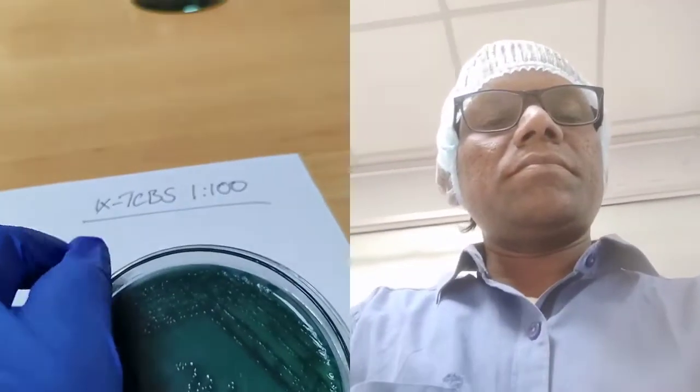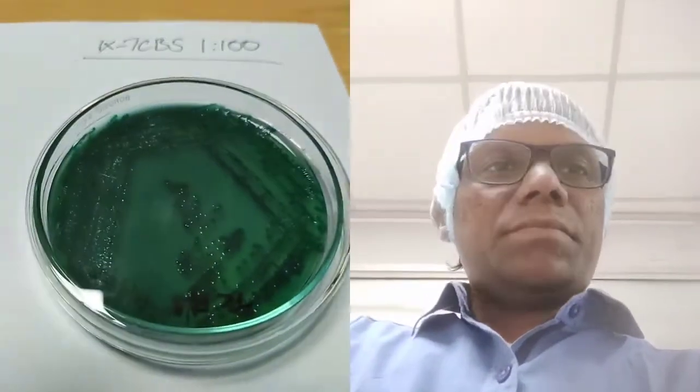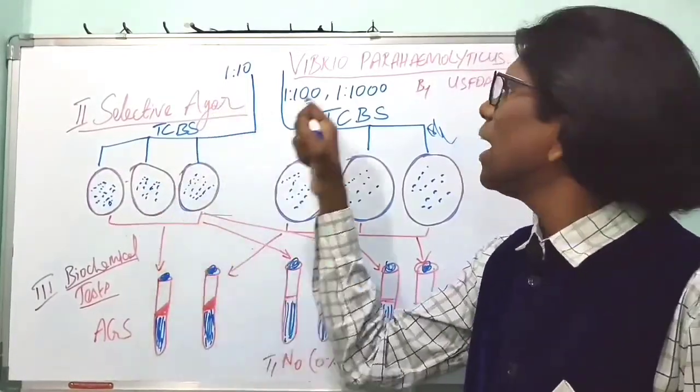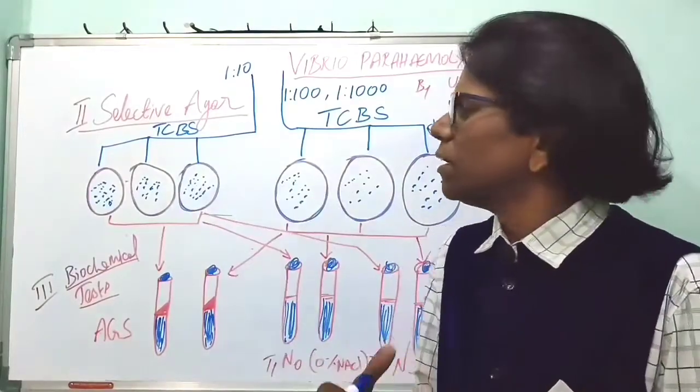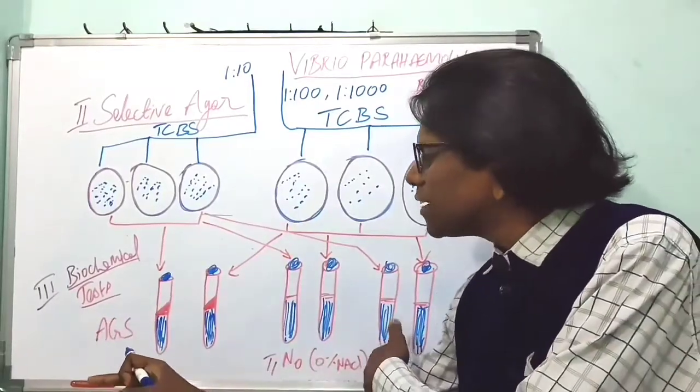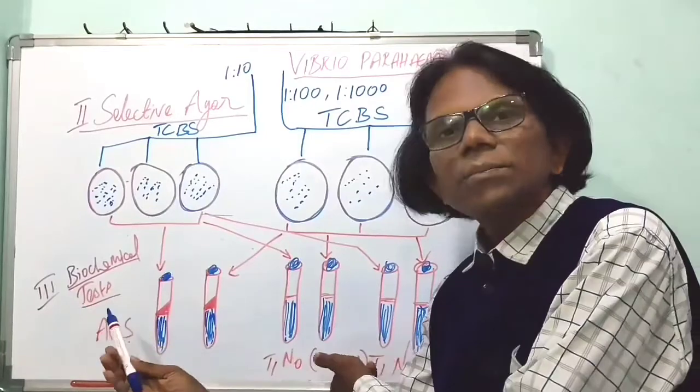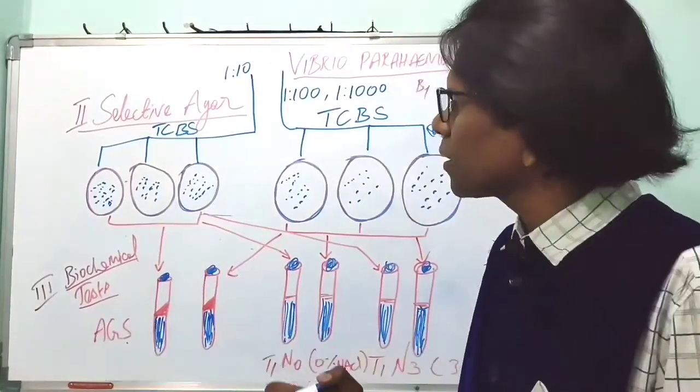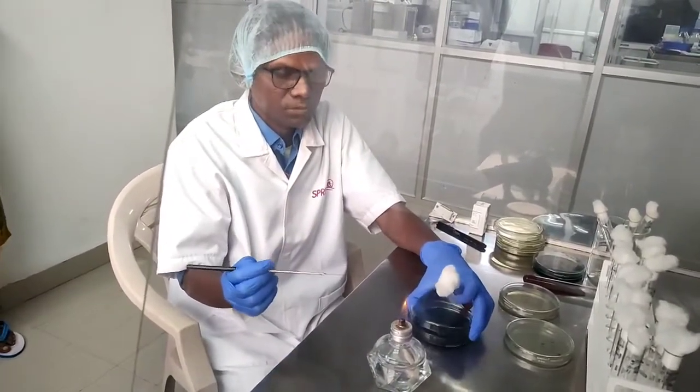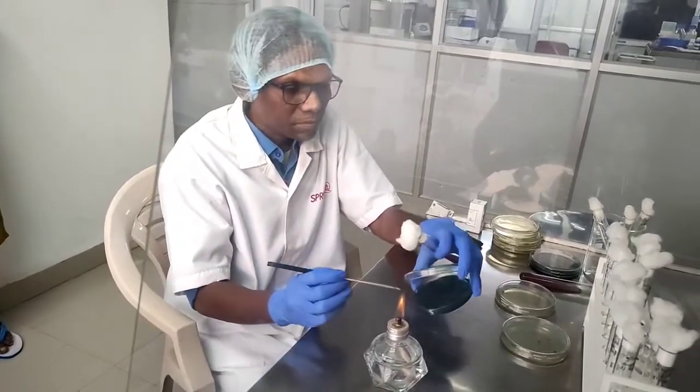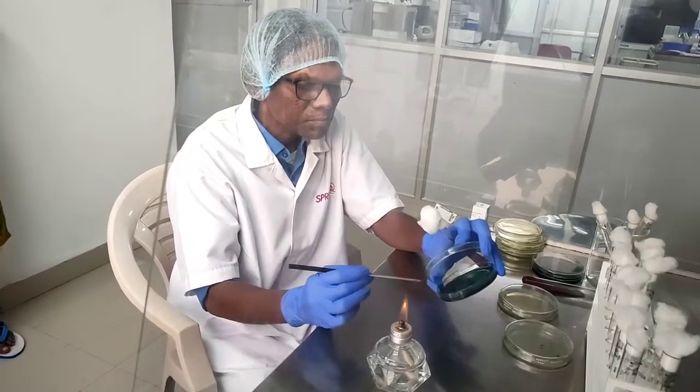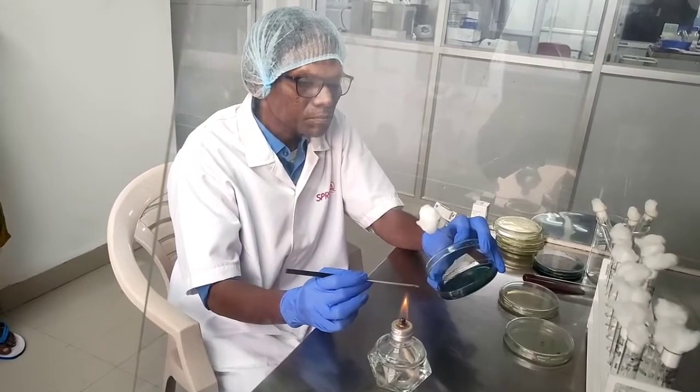We will go for biochemical test. Pick the suspected colonies from selective agar of the 1 to 10 dilution and 1 to 100 dilution, whichever it may be. Pick the suspected colonies from selective agar and streak onto arginine glucose slant. This is the biochemical test or screening test. Transfer 2 or more suspected colonies from TCBS plates to arginine glucose slant. Streak the slant and stab the butt. Keep it for incubation overnight at 35 plus or minus 2°C.